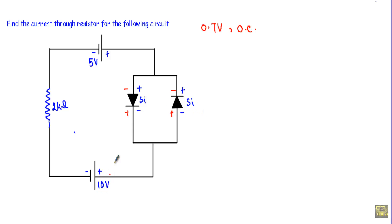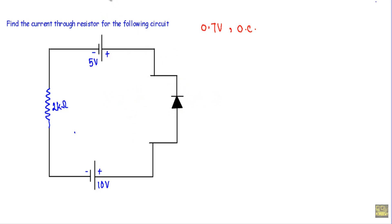Since the 10V source dominates over the 5V source, one silicon diode will be in reverse bias and the other will be in forward bias — driven by the 10V source. I will replace the reverse-biased silicon diode with an open circuit, and the forward-biased silicon diode with a voltage source of 0.7V, with its positive terminal and negative terminal oriented correctly. The resultant current flows in the identified direction; let's call it I.